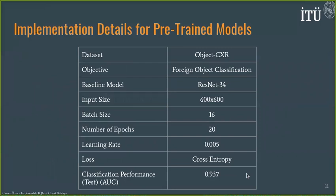Our pre-trained model for classifying the existence of foreign objects is a ResNet34 model. It is trained using an input size of 600×600, a base learning rate of 0.005. After training for 20 epochs with a cross-entropy loss function, we achieve an area under the curve score of 0.937 on the test set.